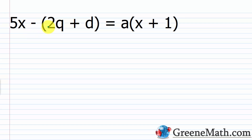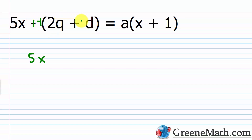Let's look at one more: 5X minus the quantity 2Q plus D equals A times the quantity X plus 1. We want to solve for X. Since I have X on both sides, I'll use the distributive property first: 5X minus 2Q minus D equals AX plus A.